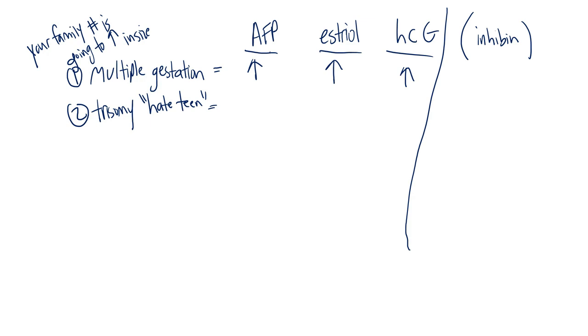I think of a teenager with a really bad attitude who is hateful and rude. They have all negative traits. When you look at trisomy 18, everything is decreased. That makes it simple for Edwards syndrome.